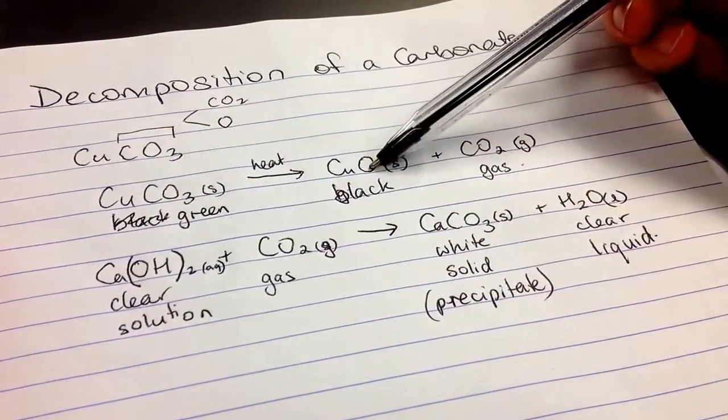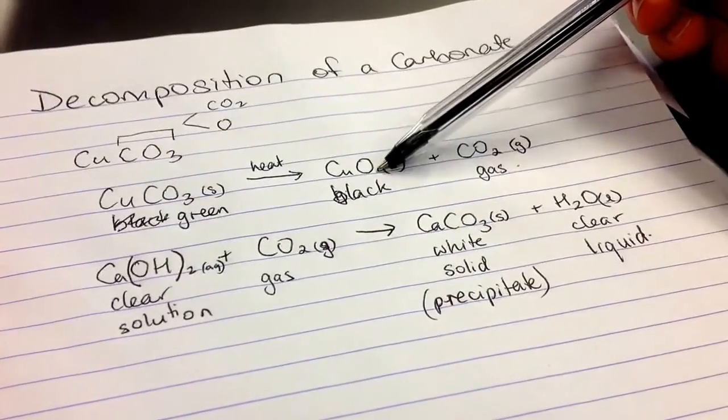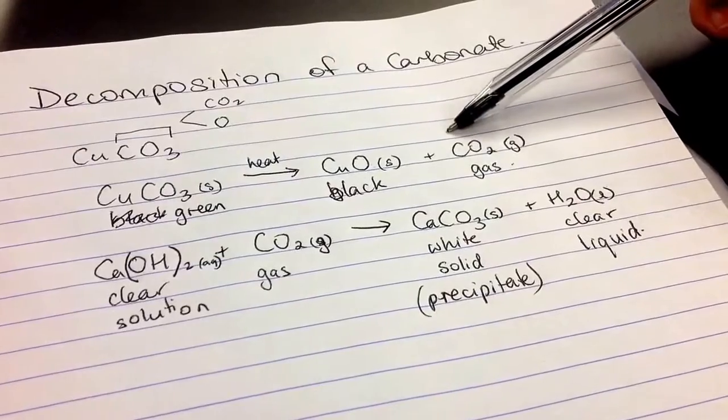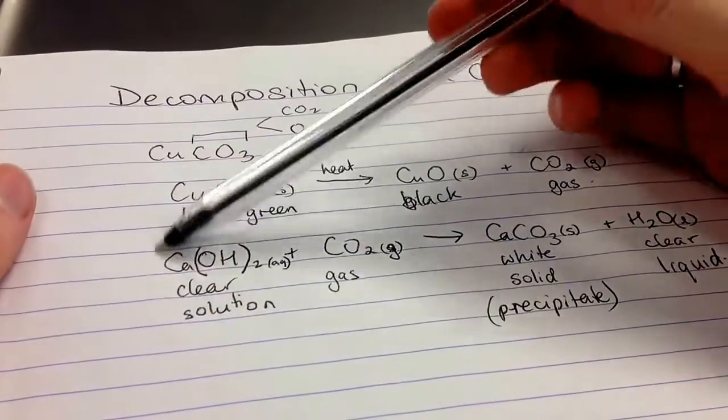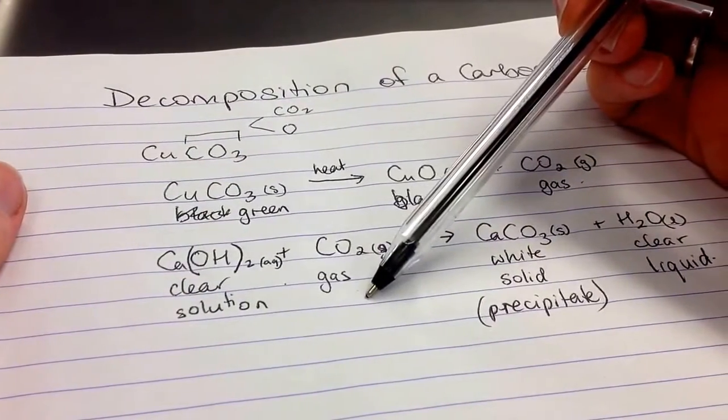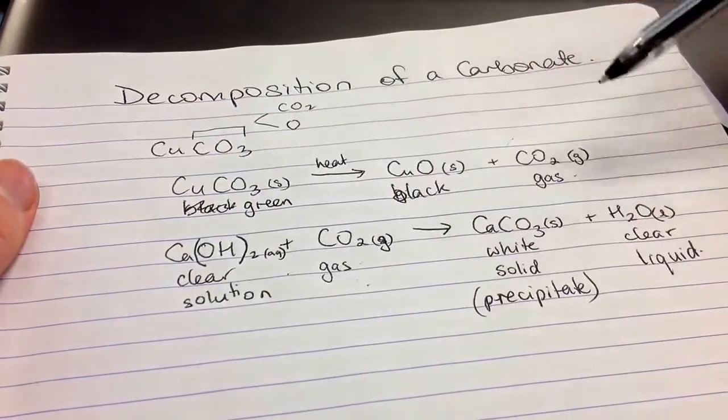So the color change going from green to black is one indicator of a chemical change. And also the production of a gas is another indication that a chemical change has taken place. The other thing we saw is we got a clear solution. And when it reacted with this gas that we bubbled through it, it didn't actually come from this reaction. It came from this reaction.